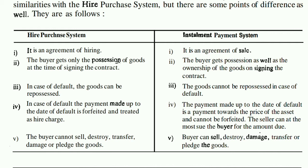The third point concerns repossession on default. In the Hire Purchase System, if you have not paid or defaulted, the seller can repossess the goods. The payments made up to the date of default are forfeited and treated as hire charges — meaning, if you paid 5 out of 12 installments, the company forfeits those payments as hire charges and also takes back the goods.